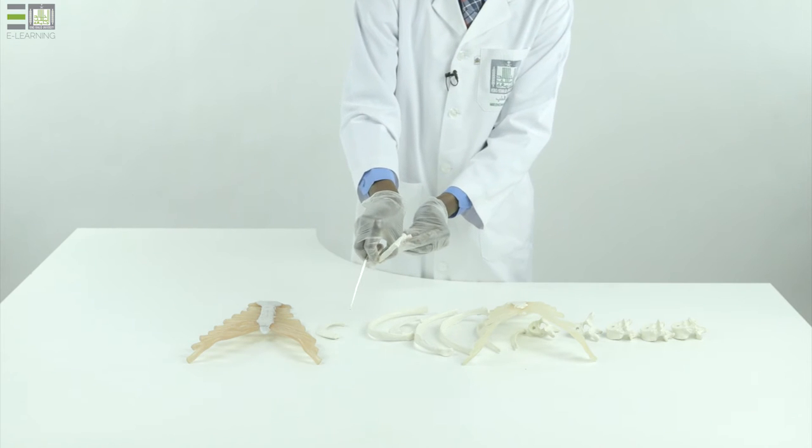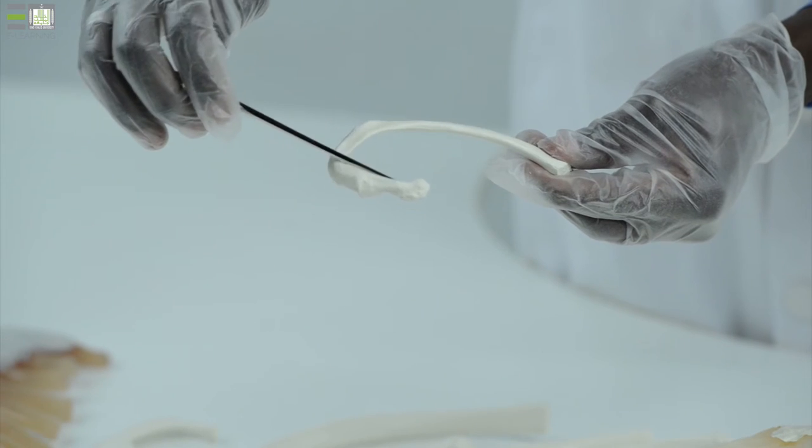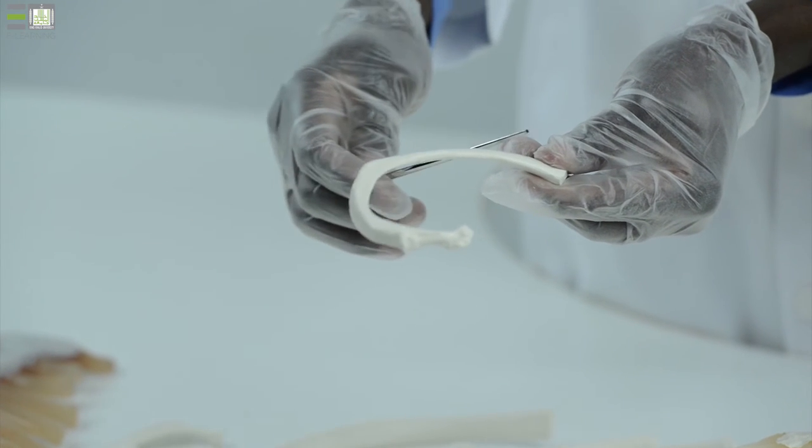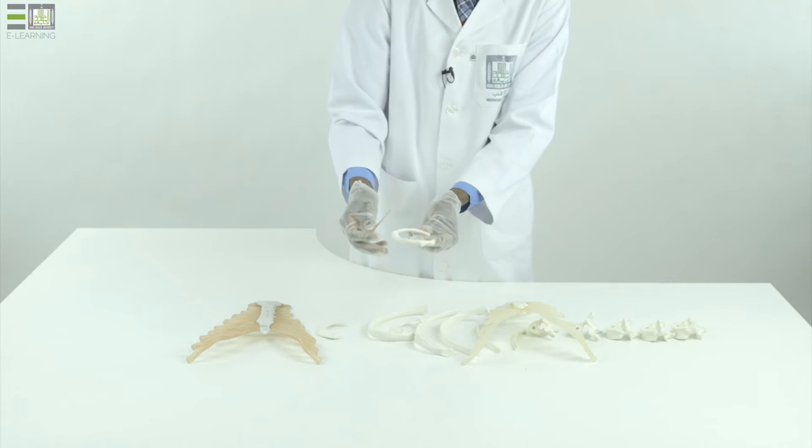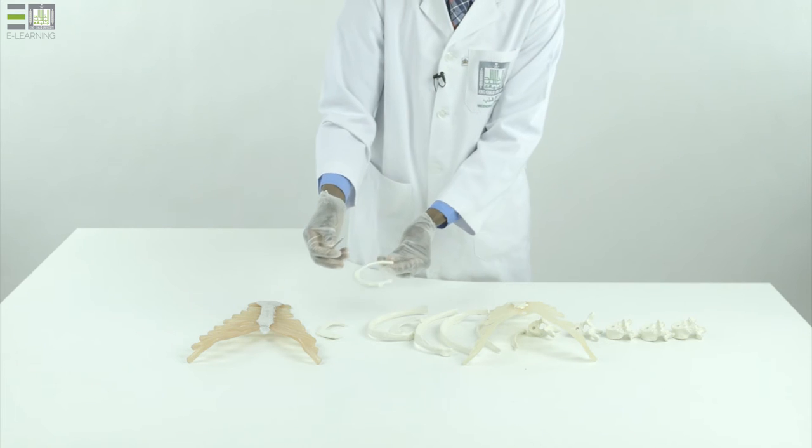The second rib also has superior lateral and inferior medial surfaces. So, it is also considered as atypical rib.